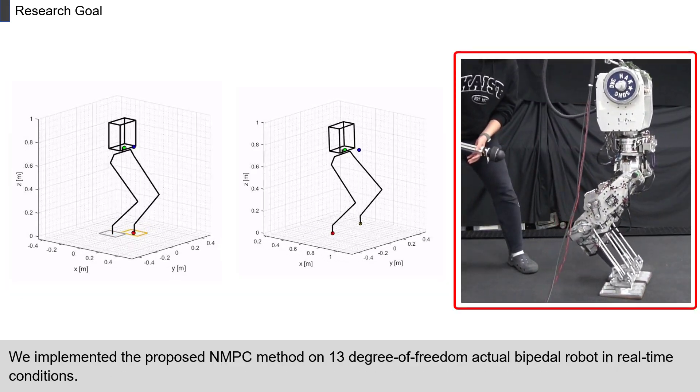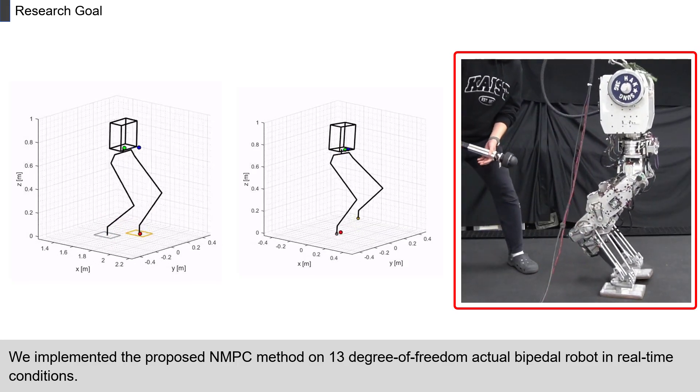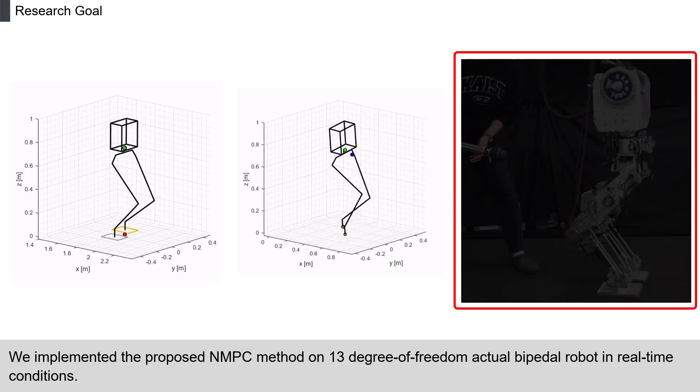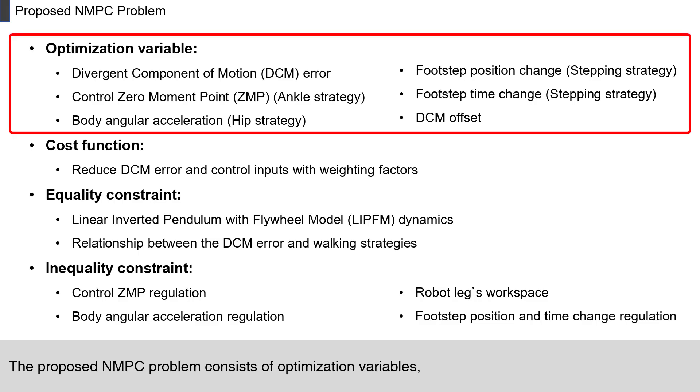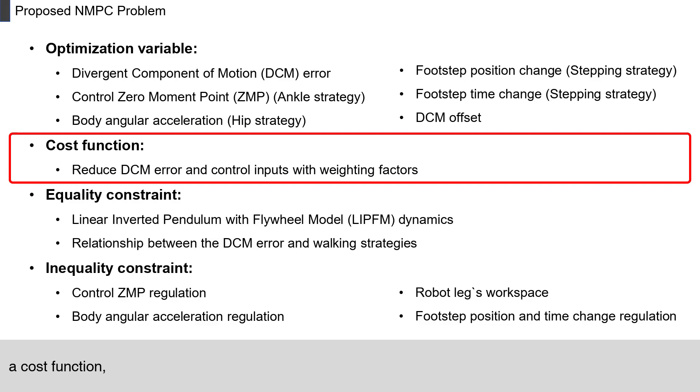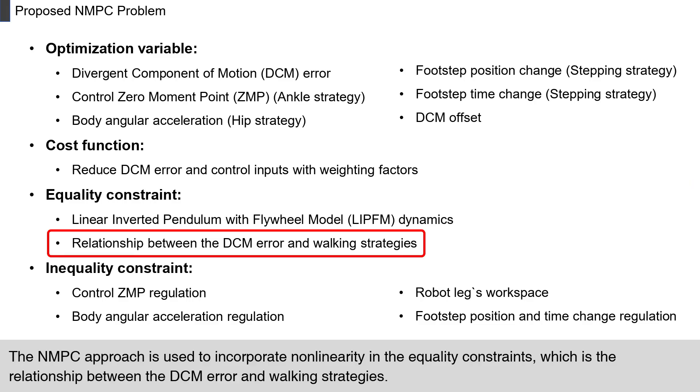We implemented the proposed NMPC method on a 13-degree-of-freedom actual bipedal robot in real-time conditions. Here is a brief overview of the proposed NMPC problem. The proposed NMPC problem consists of optimization variables, a cost function, and constraints. The NMPC approach is used to incorporate non-linearity in the equality constraints, which is the relationship between the DCM error and walking strategies.